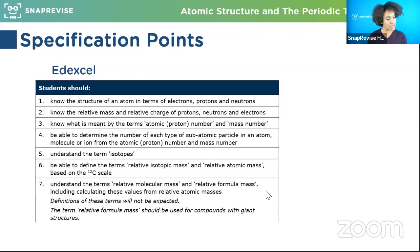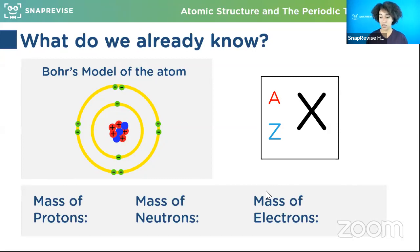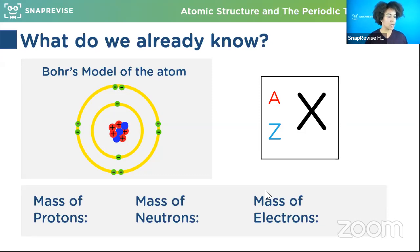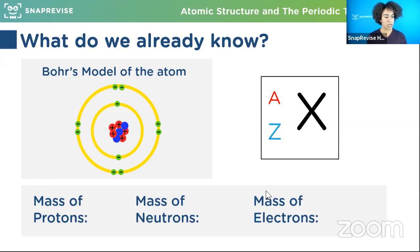The first thing we're going to do is talk about what we should already know from GCSE, so that we can properly get our new A-level knowledge. You guys are going to help me out with some answers. This is Bohr's model of the atom - the most recent simple one. A nice simple question: what is that thing in the middle? What is the red and blue bit in the middle? Somebody want to put that in the comments?